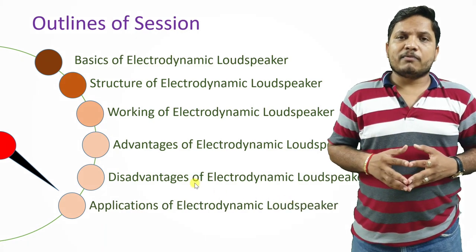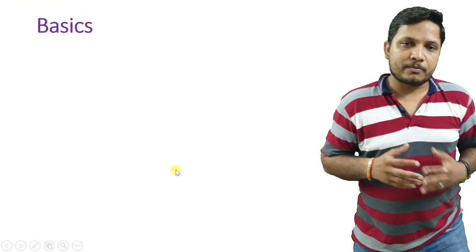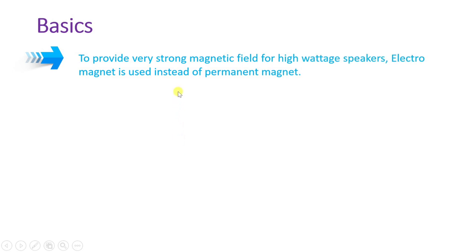Let us begin with the first agenda: basics of Electrodynamic Loudspeaker. Basically, in the Electrodynamic Loudspeaker, to provide a very strong magnetic field for a high power speaker, an electromagnet is used instead of a permanent magnet. In the previous session we saw the moving coil loudspeaker which used a permanent magnet, and that could only handle power from a few milliwatts to 25 watts.